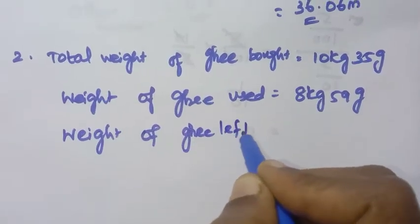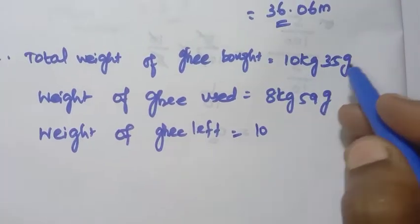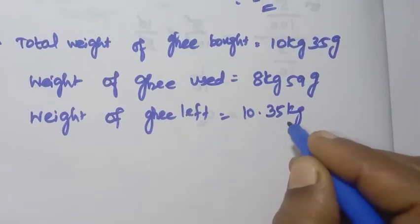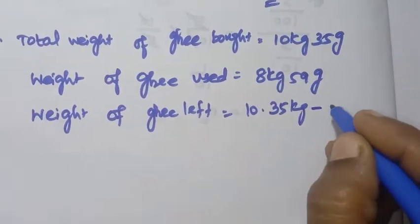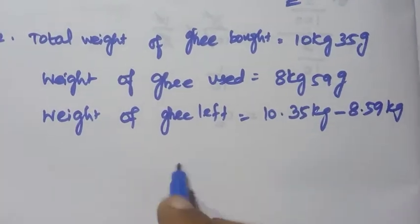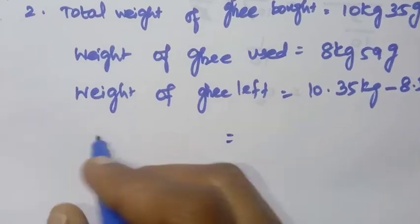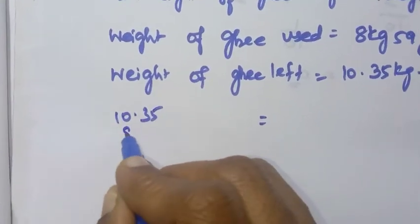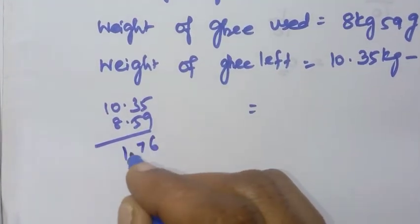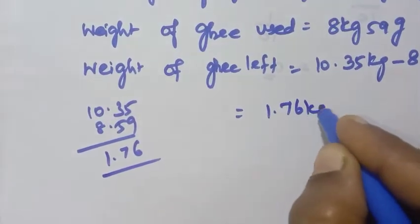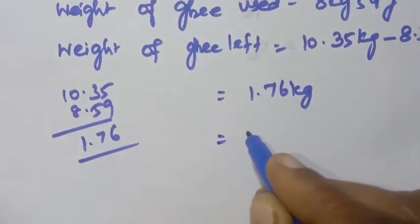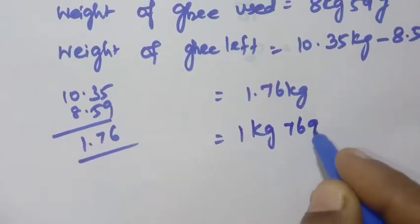Ghee left equals total weight minus ghee used: 10.35 minus 8.59 kg. The calculation gives 1.76 kg. So the weight of ghee left is 1.76 kg.